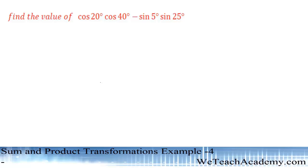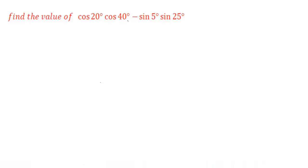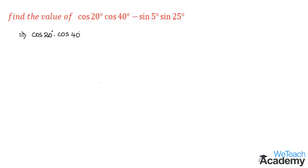Hi guys, welcome to BDJ Academy. In this section we are going to deal with an example. The given example is: find the value of cos 20° × cos 40° − sin 5° × sin 25°. Let us rewrite the given expression: cos 20° × cos 40° − sin 5° × sin 25°.